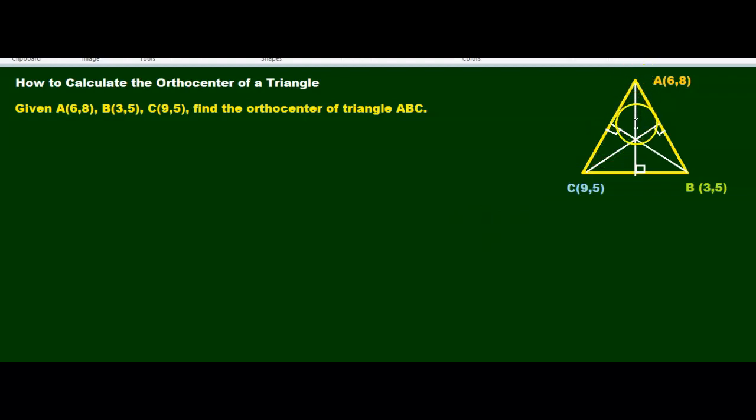We're first going to use the altitude, the vertical altitude. What is our equation of this line CB? Line CB is Y equals 5 because, as you can see, they're both passing through the Y coordinate 5. Now, what's our altitude of CB?